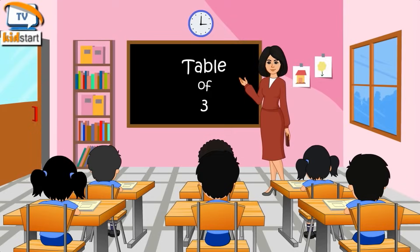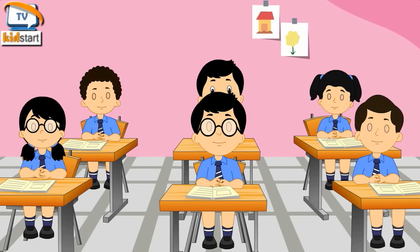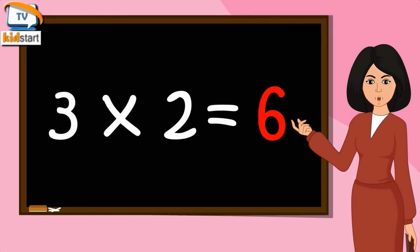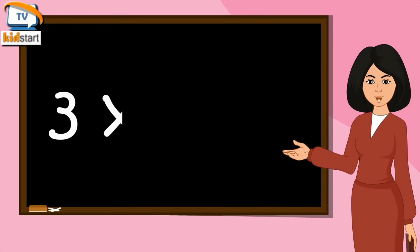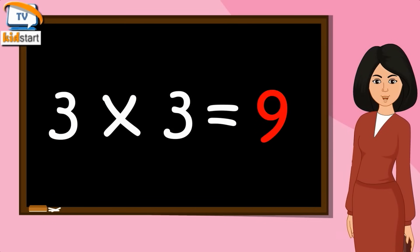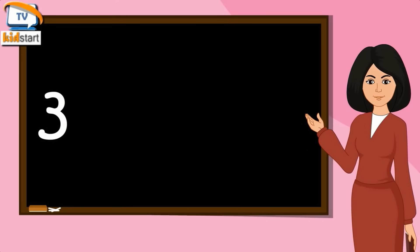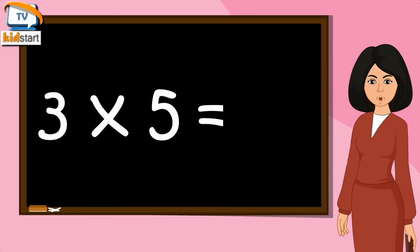Three Ones are Three. Three Twos are Six. Three Threes are Nine. Three Fours are Twelve. Three Fives are Fifteen.